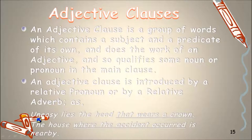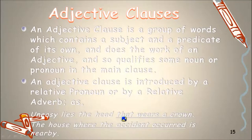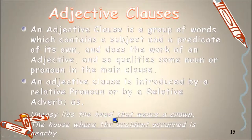Consider the example: 'Uneasy lies the head that wears a crown.' Here, 'uneasy lies the head' is the principal clause, and 'that wears a crown' is the subordinate clause — an adjective clause. This clause is introduced with the relative pronoun 'that,' which indicates and describes the noun 'head.' That's why it performs the task of an adjective and is considered an adjective clause.